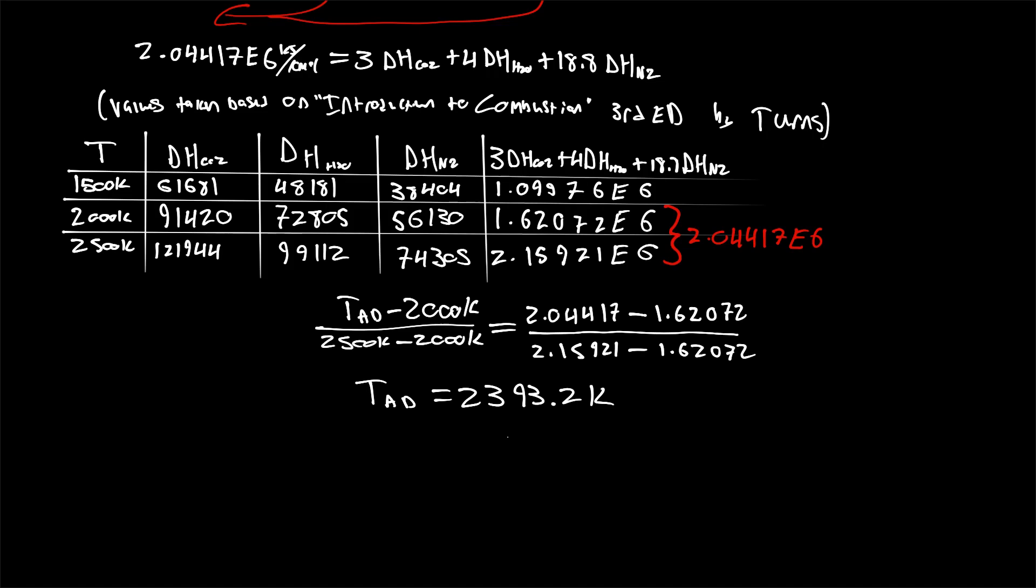So we get an approximate adiabatic flame temperature of 2393.2 Kelvin. Now, if we wanted to get this more exact, we could further discretize this region between 2,000 Kelvin and 2,500 Kelvin to get a little bit more of an accurate answer, but we should be pretty close, within 5% at least.